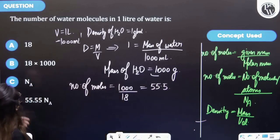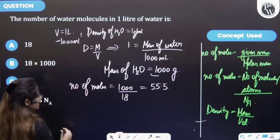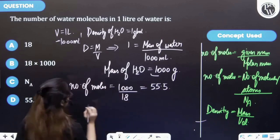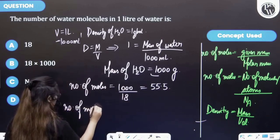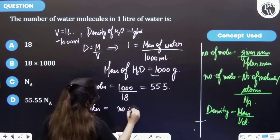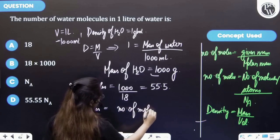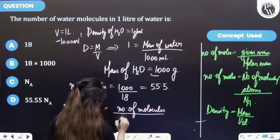Further, we have asked for the number of water molecules. So for this let's use this formula: number of moles equal to number of molecules upon Na.